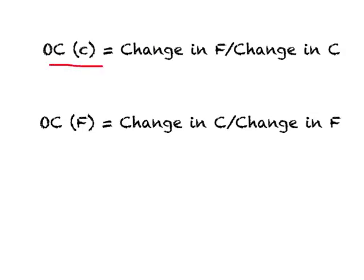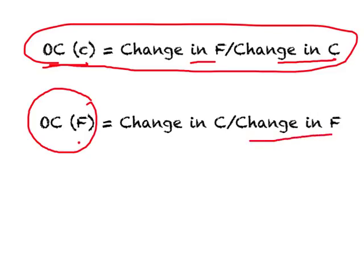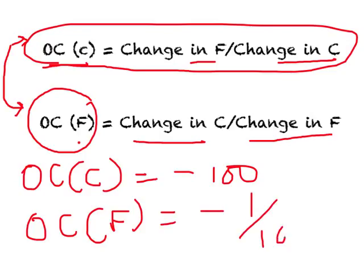We already know Opportunity Cost of Clothing is change in food divided by change in clothing. Economics is systematic: when finding OCC, clothing appears in the denominator and food in the numerator. Similarly, Opportunity Cost of Food will have change in food in the denominator and change in the other good in the numerator. This tells us that the opportunity cost of one good is always the inverse of the other. For example, if OCC is negative 100, then Opportunity Cost of Food will be negative 1/100.